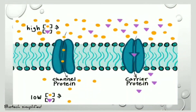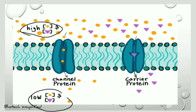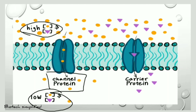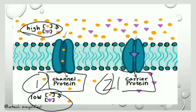This diagram explains facilitated diffusion. As discussed, it is the movement of molecules from a high concentration to a low concentration with the help of a channel protein or a carrier protein. There are two mechanisms for facilitated diffusion: the first is channel protein, and the second is carrier protein.